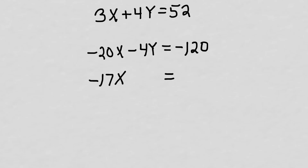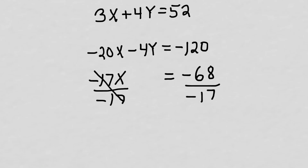If I add 52 and minus 120 I get minus 68. Now I want to divide both sides by negative 17. Negative 17 cancels out, and I'm left with x equals negative 68 divided by negative 17, which gives me 4. So x equals negative 4. I'll write that up here — still have to solve for y.